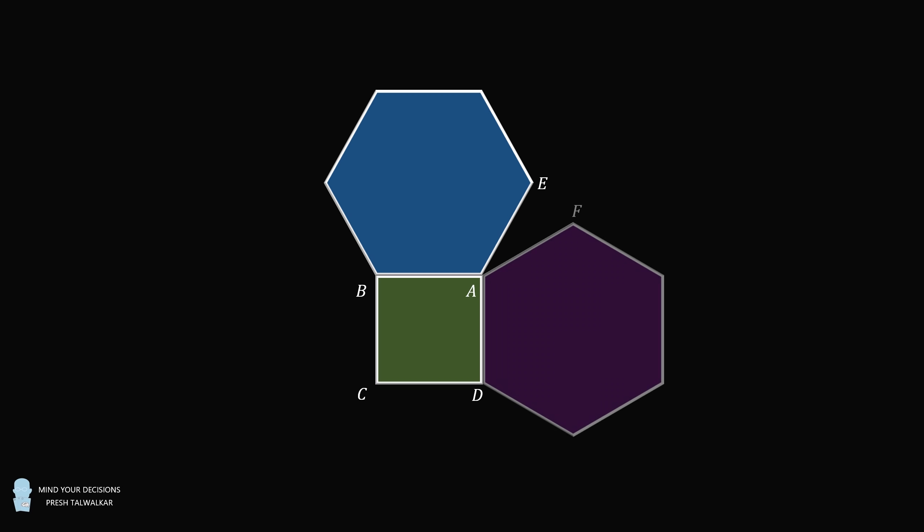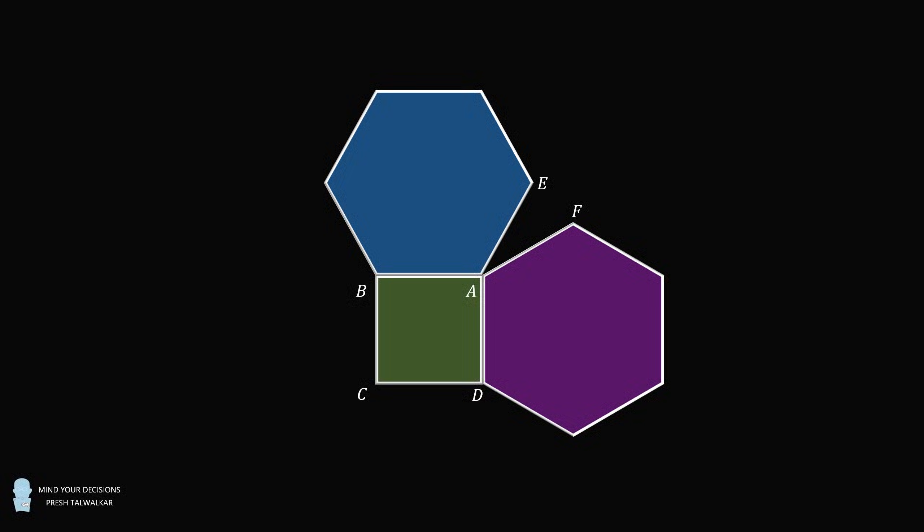Alongside AB and AD are two flaps. Each flap is in the shape of a regular hexagon. The vertices E and F are adjacent to the vertex A.